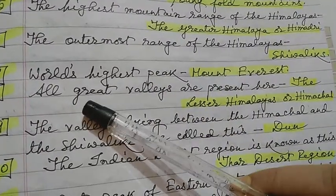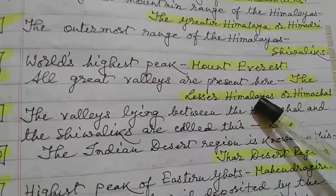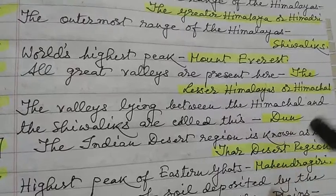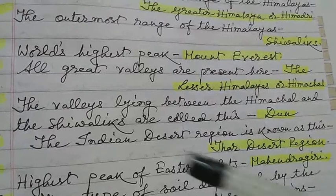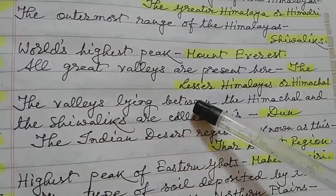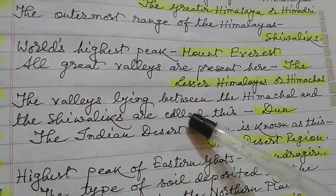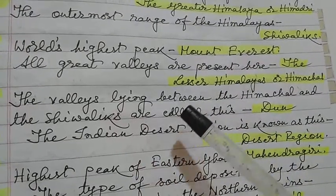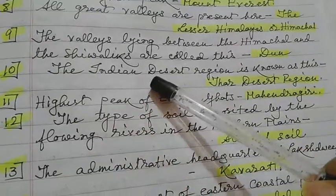All great valleys are present in the lesser Himalayas or Himachal — such as the Kashmir valley, Kangra valley, and others. The valleys lying between the Himachal and the Shivaliks are called duns. The Indian desert region is known as the Thar desert region.